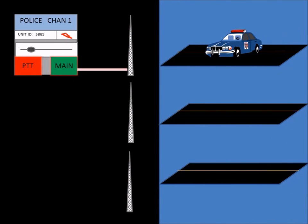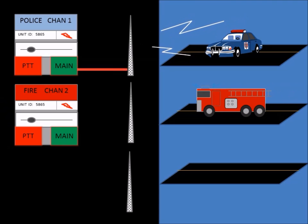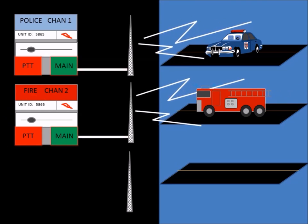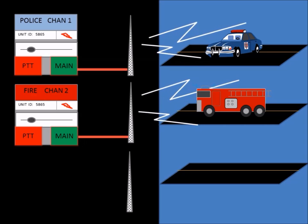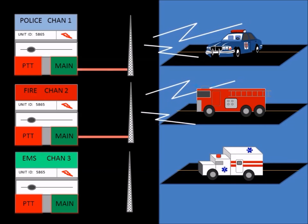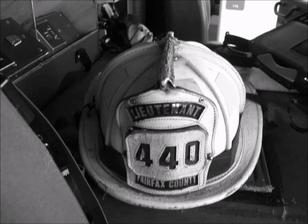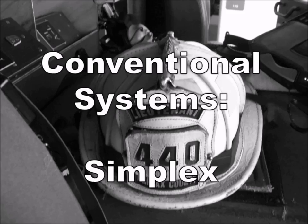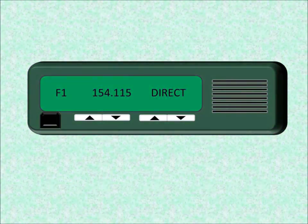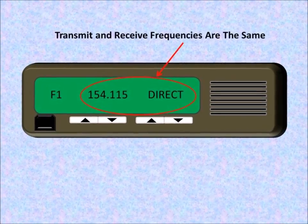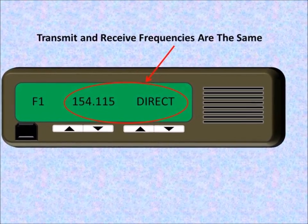Conventional systems are typically single-channel systems. An agency may have multiple frequencies from which they operate, each supporting a different user group or operation. Police may operate on one channel, fire on a second, and EMS on a third. The simplest of the conventional systems would be a single frequency, or simplex system. Simplex systems use the same frequency to transmit and receive on.